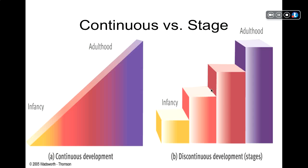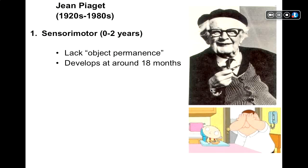We're going to talk about some of the limitations of the stage theorists, and then I'll give you a short discussion of what you have to look forward to if you're a young person. The first stage theorist we're going to talk about is Jean Piaget. He was a very influential thinker in developmental psychology, did a lot of hands-on research with kids, and we're going to talk about his cognitive theory of development — how we think and the nature of thinking changes over time. Piaget identified four stages of cognitive development.